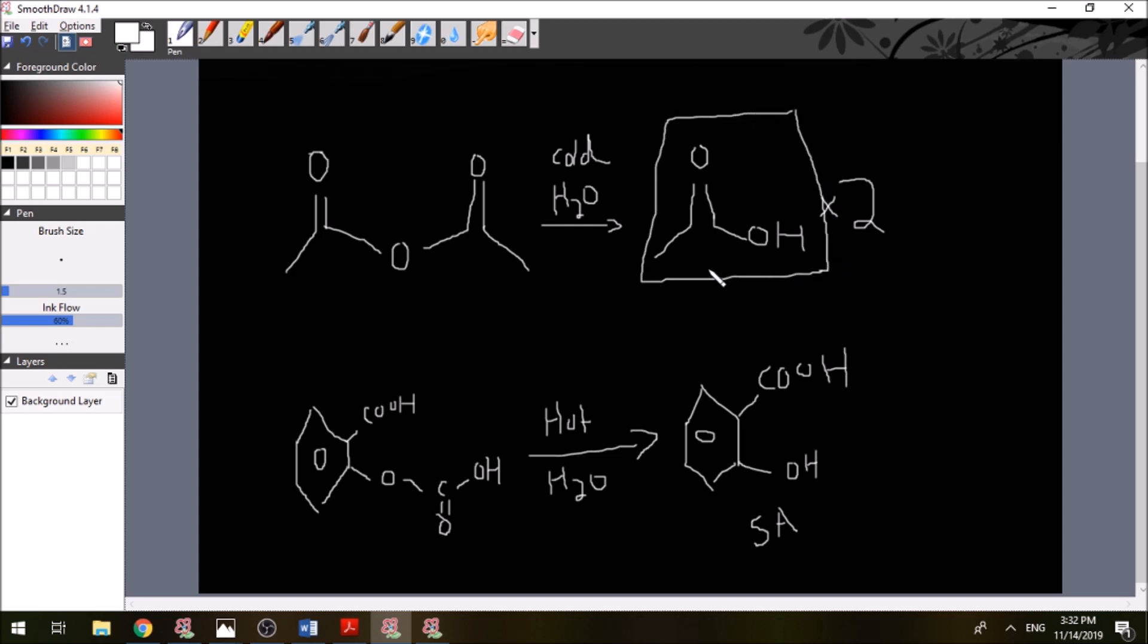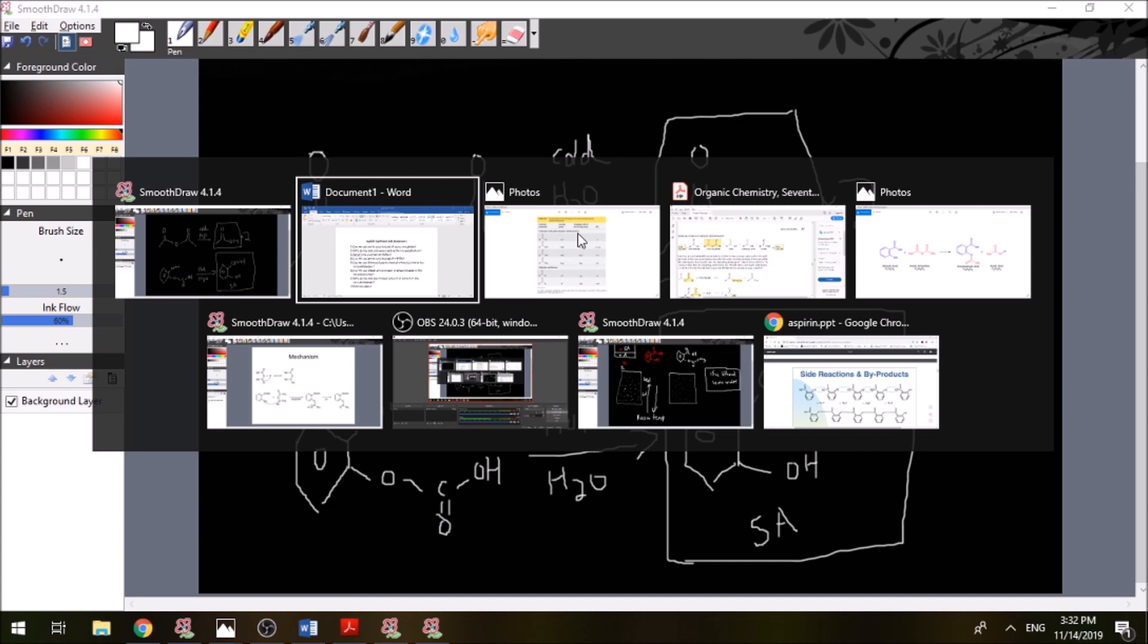We can answer another question here which is why do we use cold water? What happens if we use hot water? So if we use hot water we might degrade our aspirin so it can go through hydrolysis into salicylic acid. So we might get our initial reactant again which is a side reaction that can happen which will reduce the yield for aspirin. So that's why we use cold water for that.